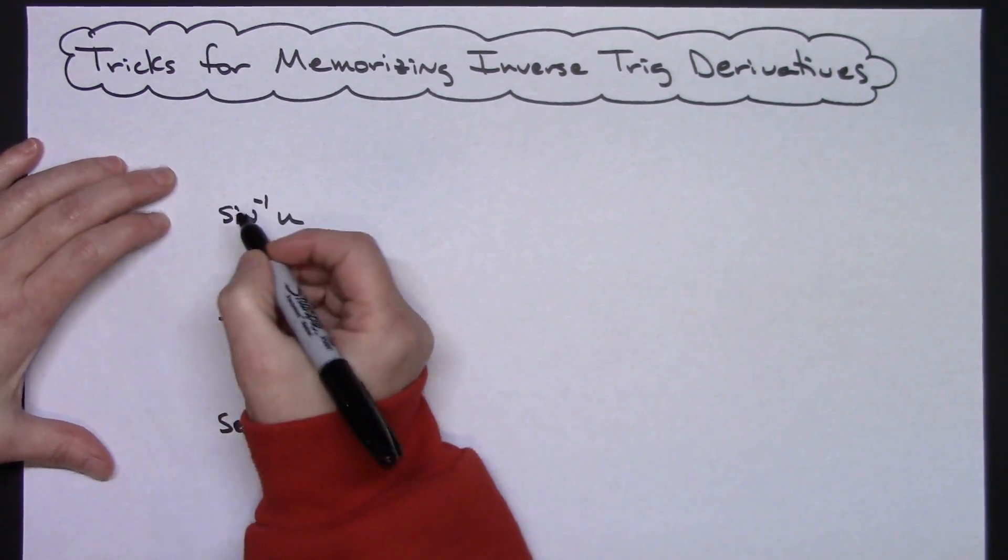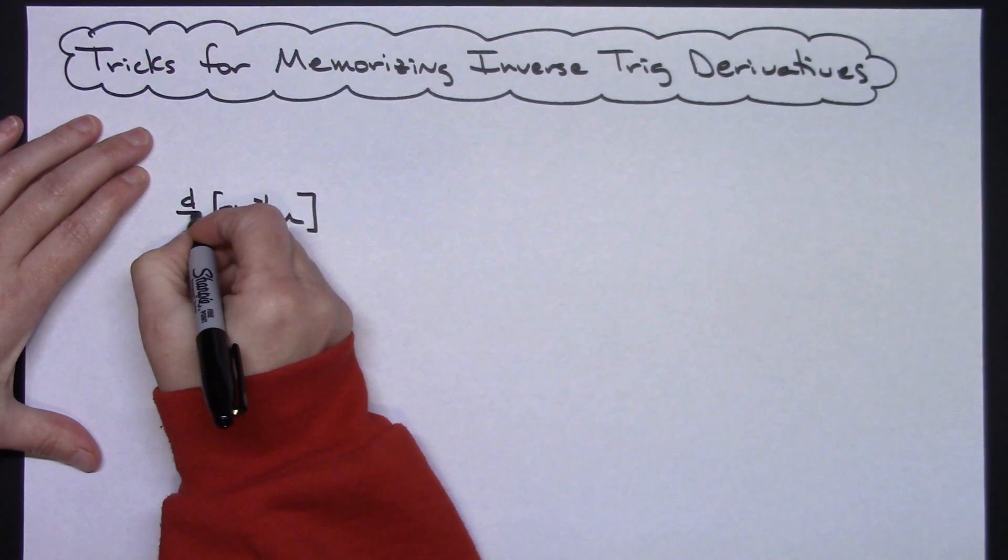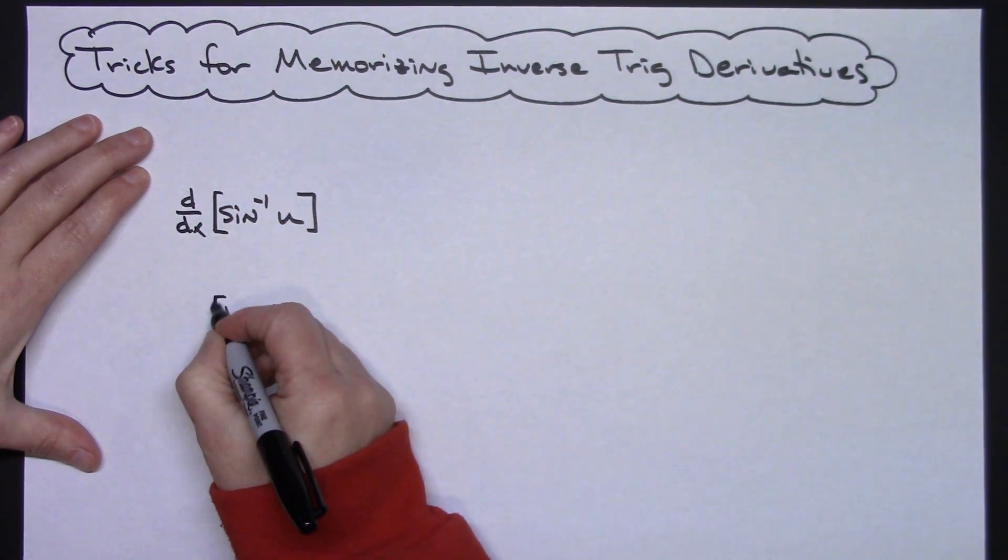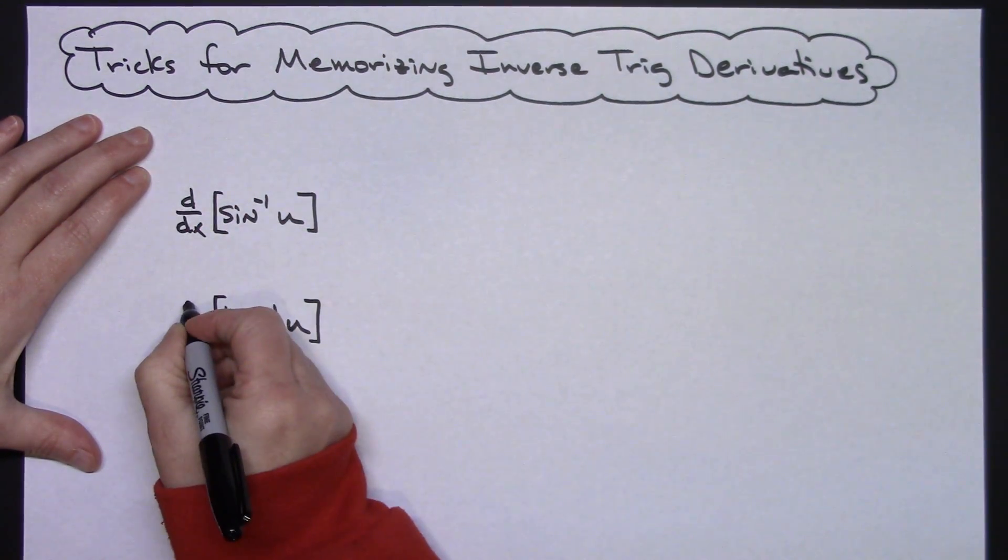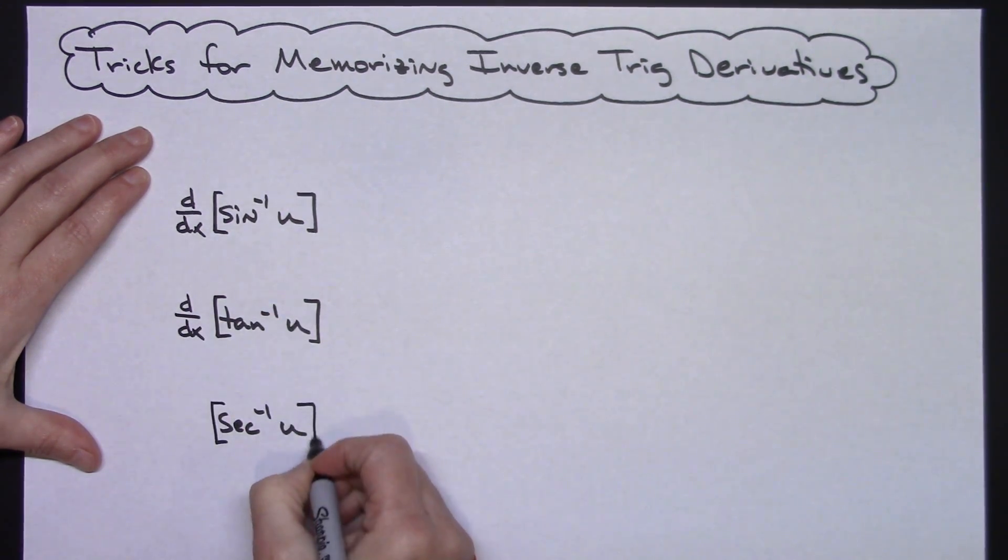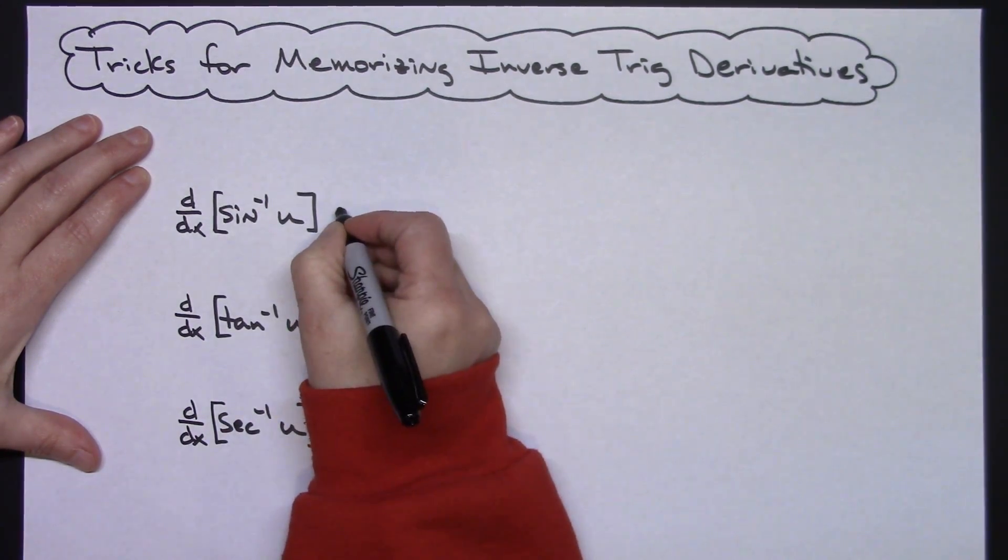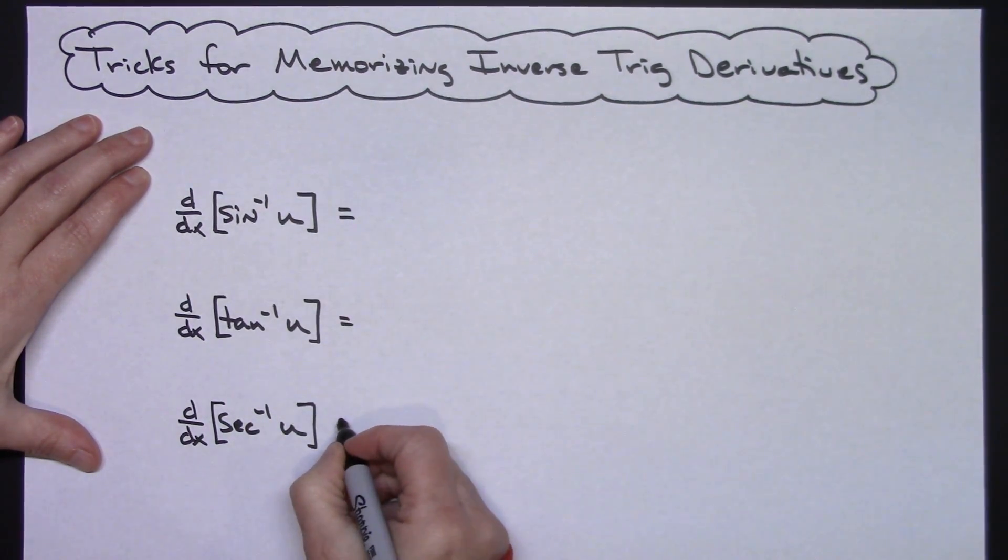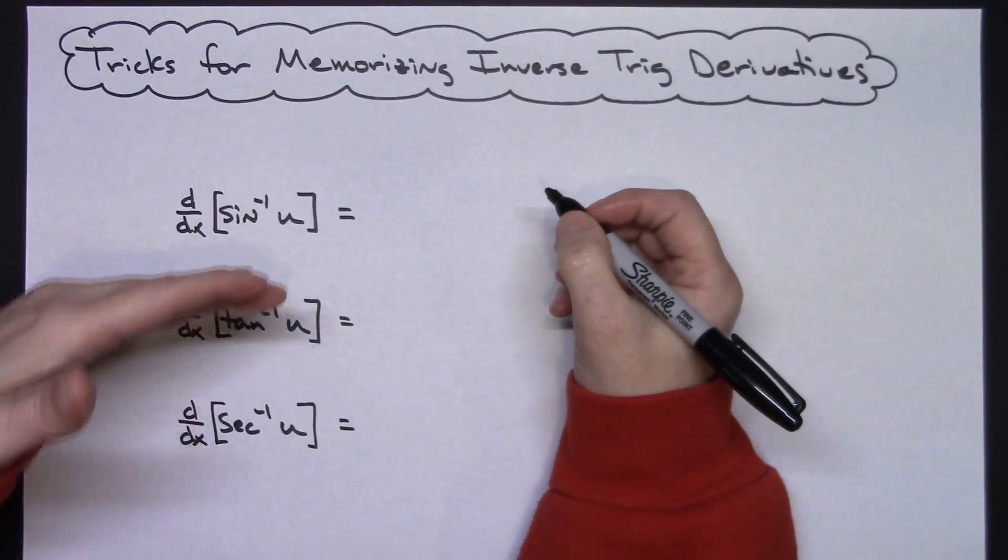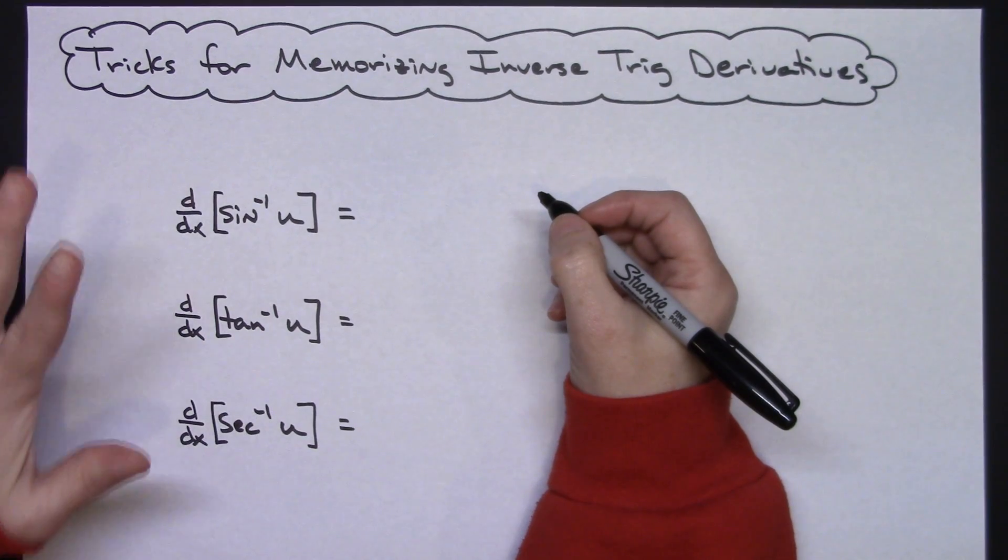Now for the video I am going to go ahead and put the d/dx in front of each one of these to show that we are taking the derivative. Probably on a test if you were trying to jot this down really fast you would not take the time to write that because you'd want to just memorize the formulas rather quickly here. So that's the first thing: I would write these three in this order - sine, tangent, secant - STS, nice little pattern there.